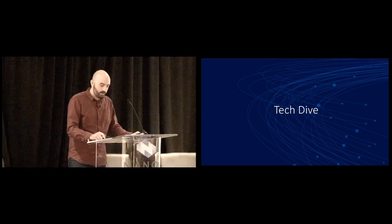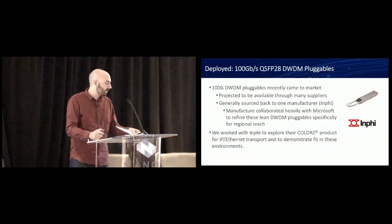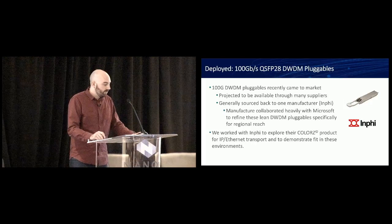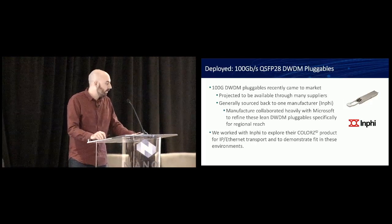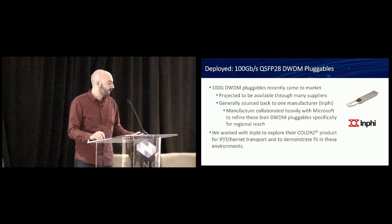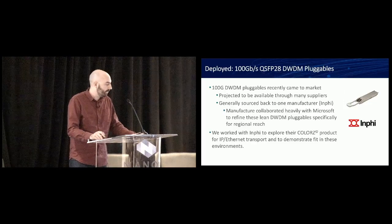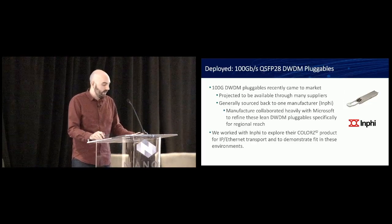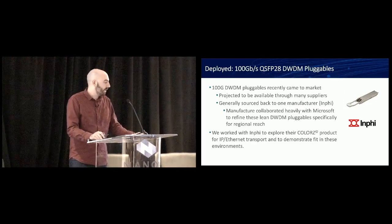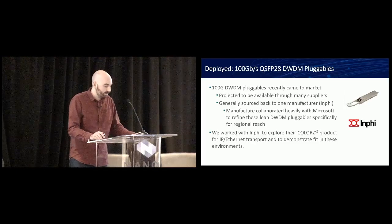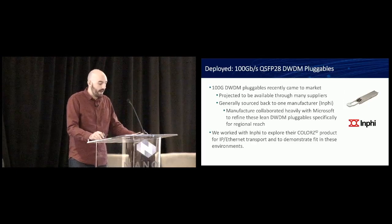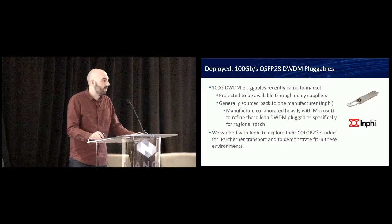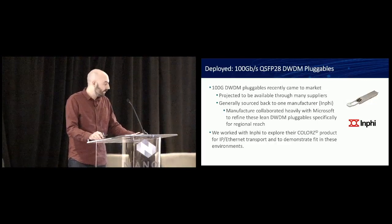Let's look a little bit more into this equipment. What did we choose to deploy? We went with 100 gigabits per second QSFP28 DWDM pluggables. They recently came to the market. They're projected to be available through many different suppliers like Adva, Arista, Juniper, Smart Optics. They'll all be selling these type of pluggables in the future.